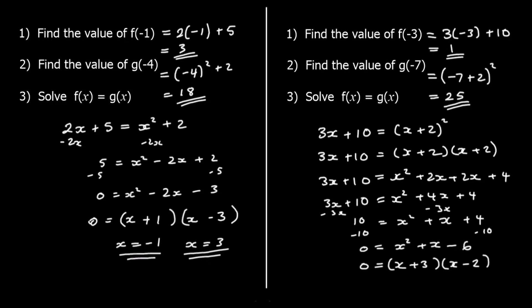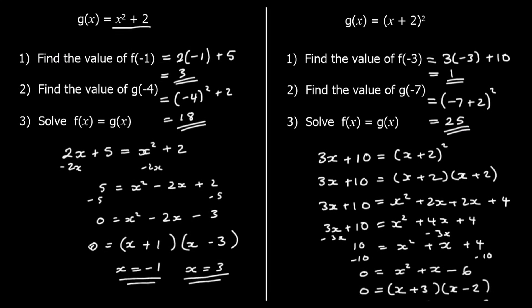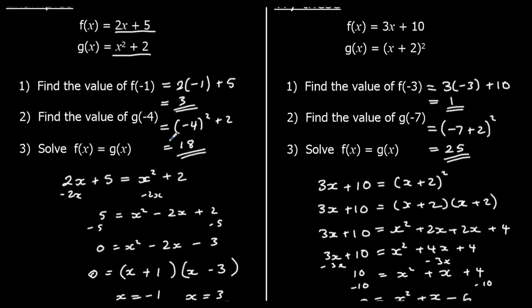So what's x equal to? For the first bracket to be zero, x must be negative 3. And for the second bracket to be zero, we've got positive 2. So x can be negative 3 or positive 2. So if negative 3 was an input, the output for both functions would be the same. And if 2 was the input, the output for both functions would be the same.